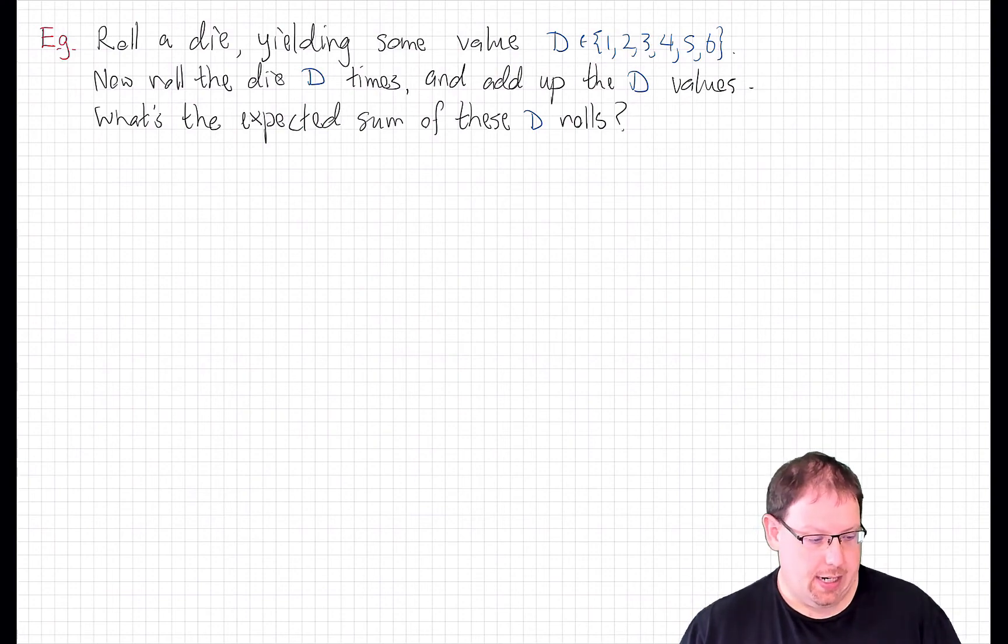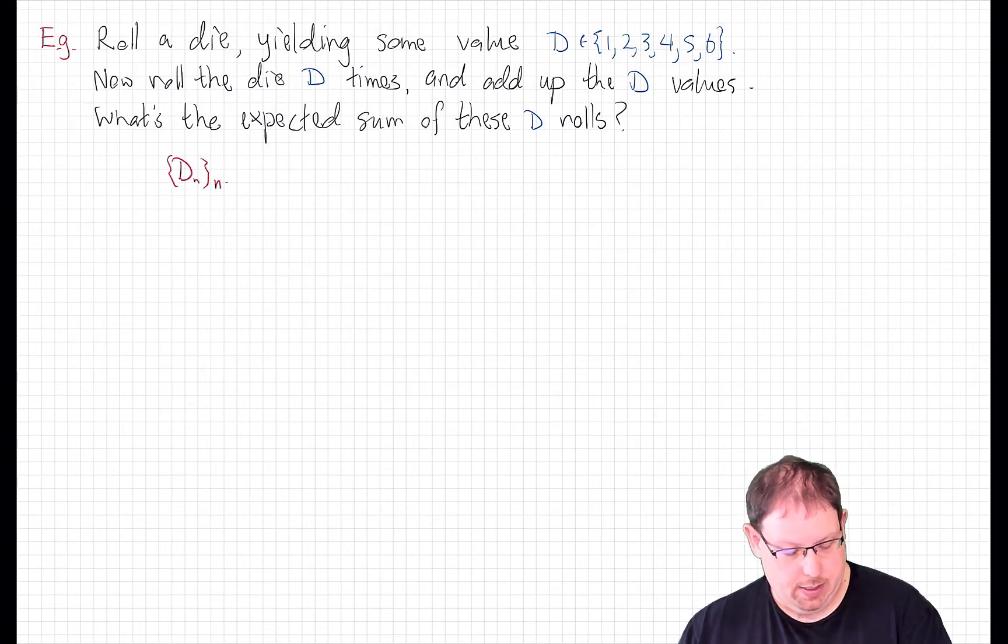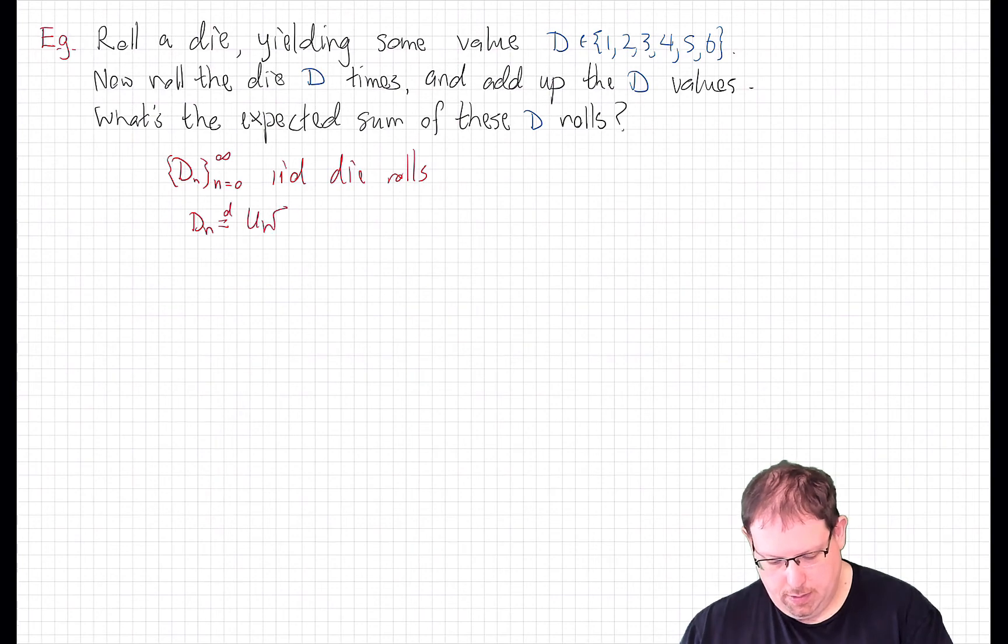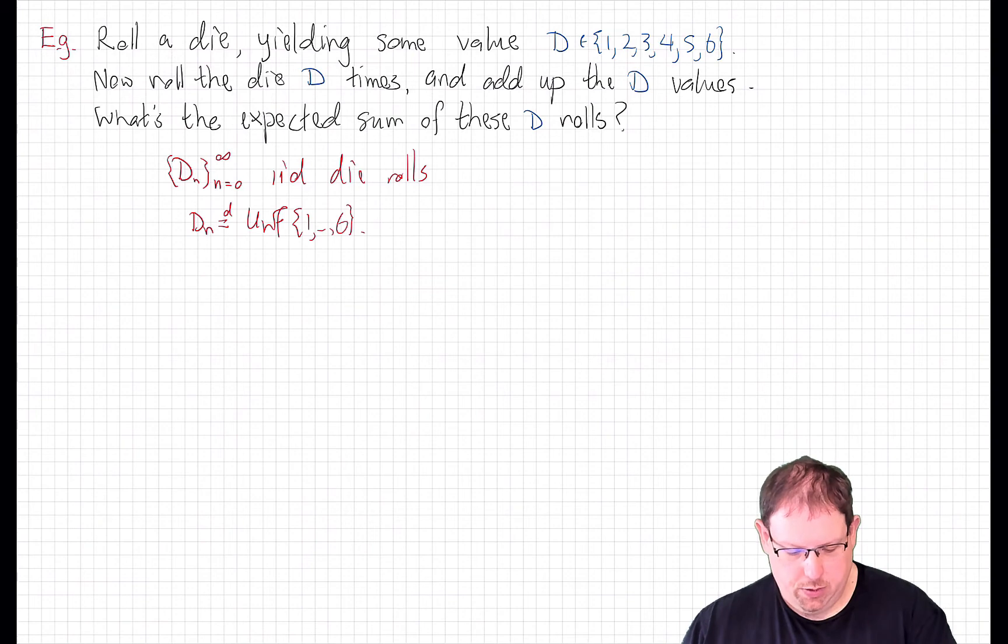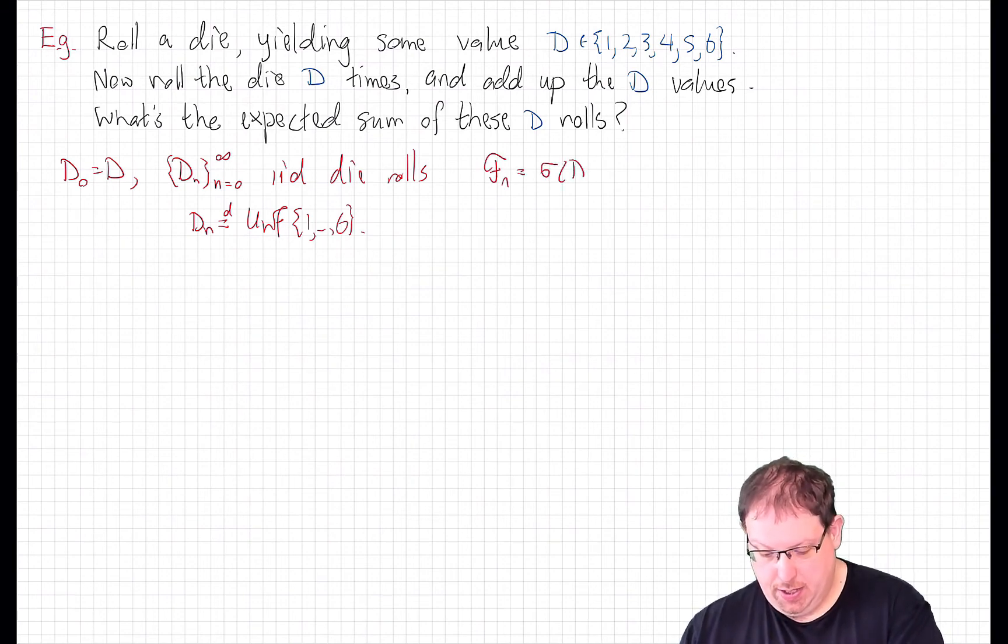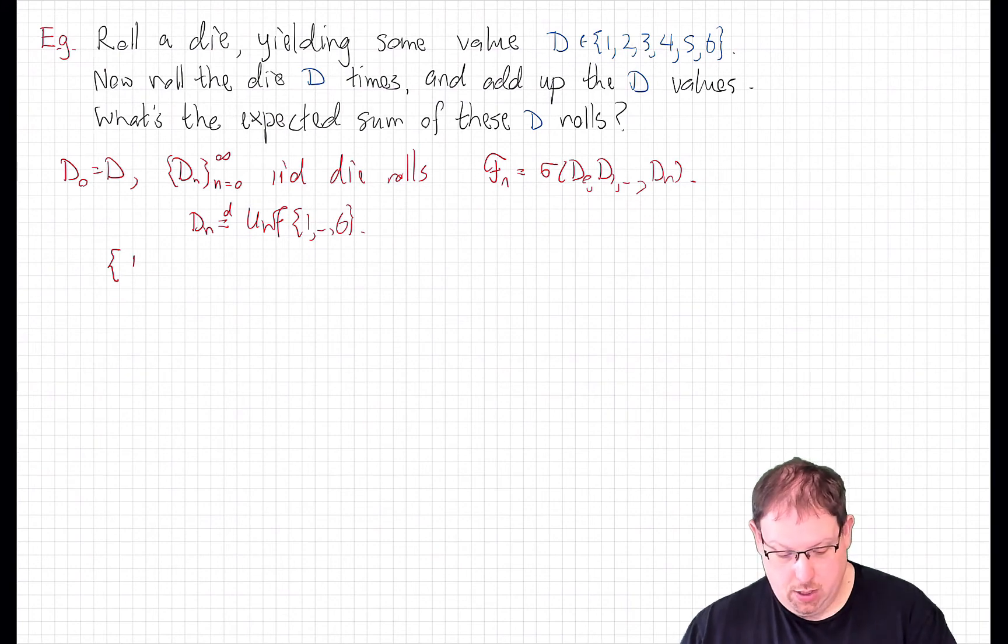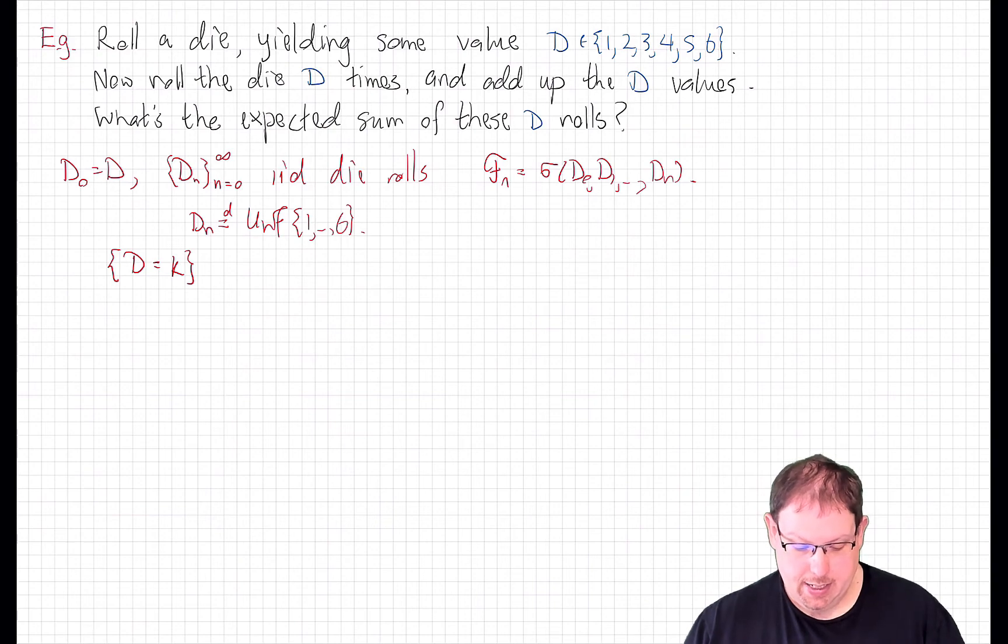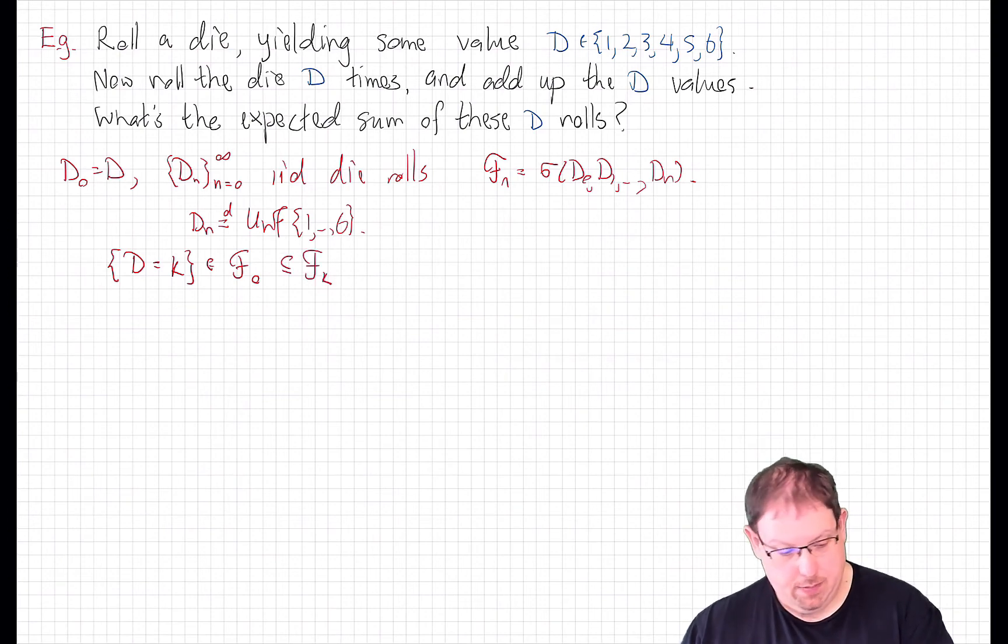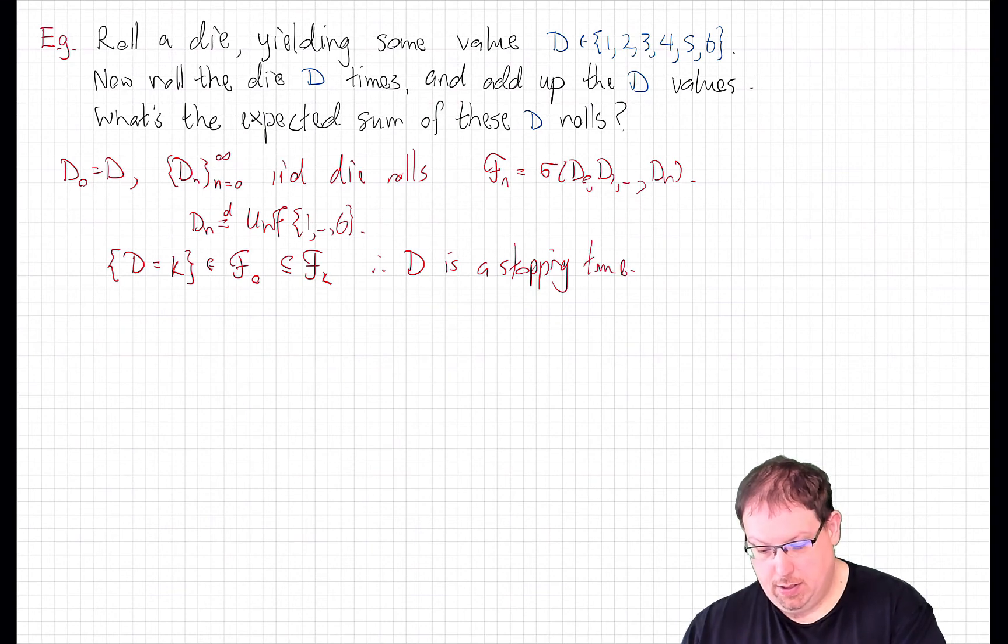We can analyze this using Wald's identity as follows. Let dn be a sequence of iid die rolls, so that the distribution of dn is uniform on the set from 1 up to 6. And we'll single out d0 as d, that first roll that we're interested in. We let Fn be the sigma field generated by d0 through dn. Now, we roll that first die, d0, and we determine its value. Its value is going to be some number k between 1 and 6. Since d is d0, that's in the sigma field F0, which is certainly contained in the sigma field Fk. And so that shows that d is a stopping time relative to this filtration.